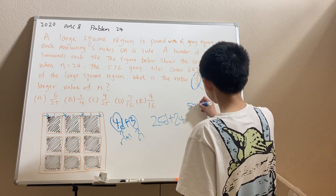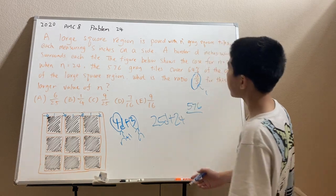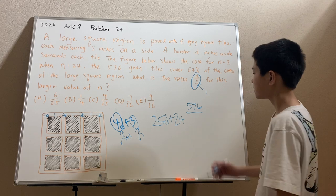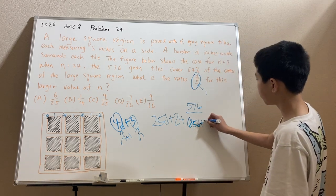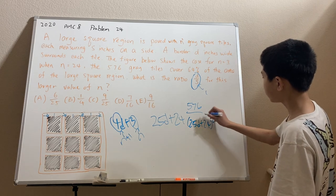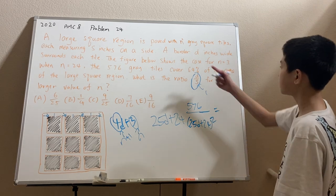So 576, divided by the total area of the square region, that's 25d plus 24 squared. And that's equal to 64%.